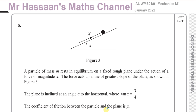Welcome back. This is Mr. Hassan's Maths Channel, and I'm answering question number 5 from the January 2022 International A-Level M1 Mechanics paper. This question is about statics. We have a particle of mass M resting in equilibrium on a fixed rough plane under the action of a force of magnitude X acting up the line of greatest slope of the plane, as shown in figure 3.